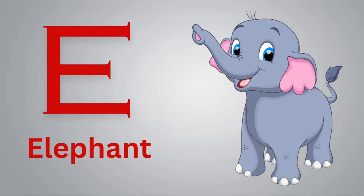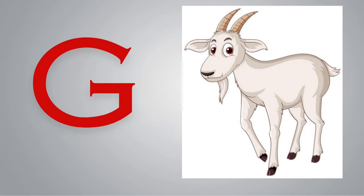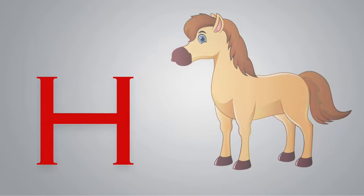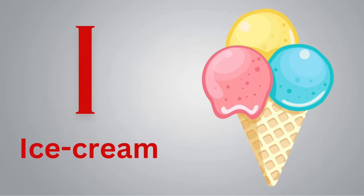E for elephant. F for fish. G for goat. H for horse. I for ice cream.